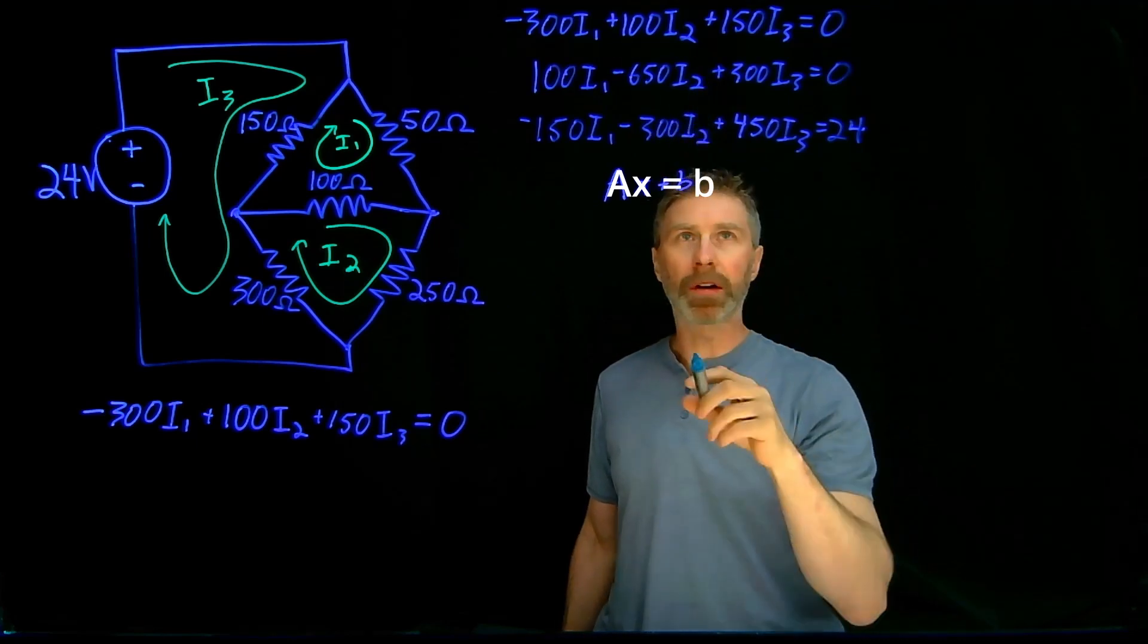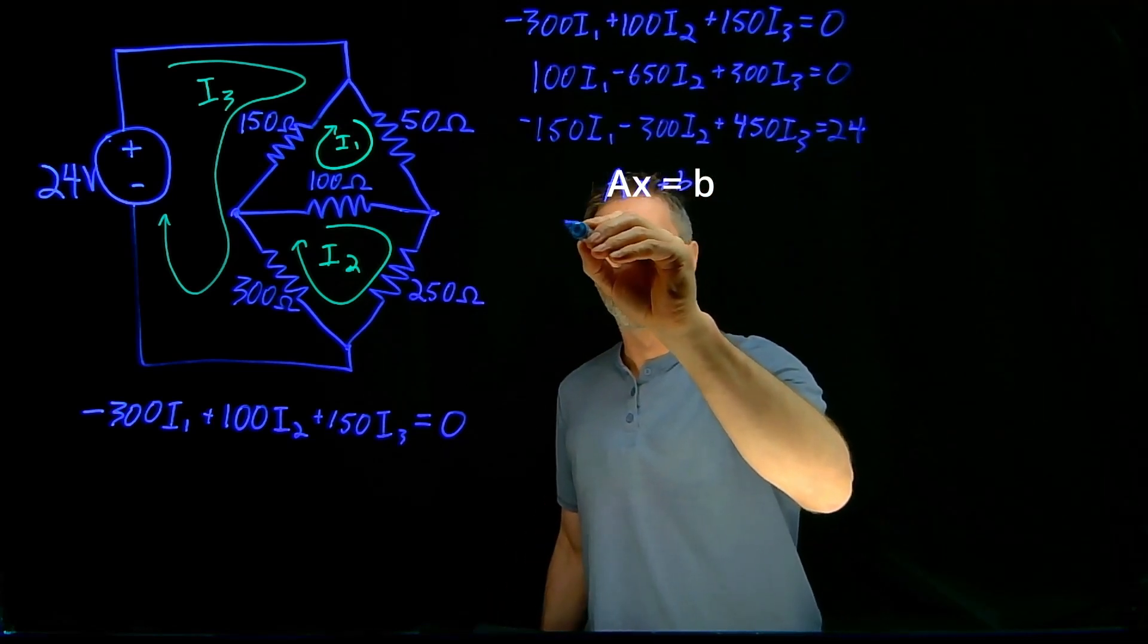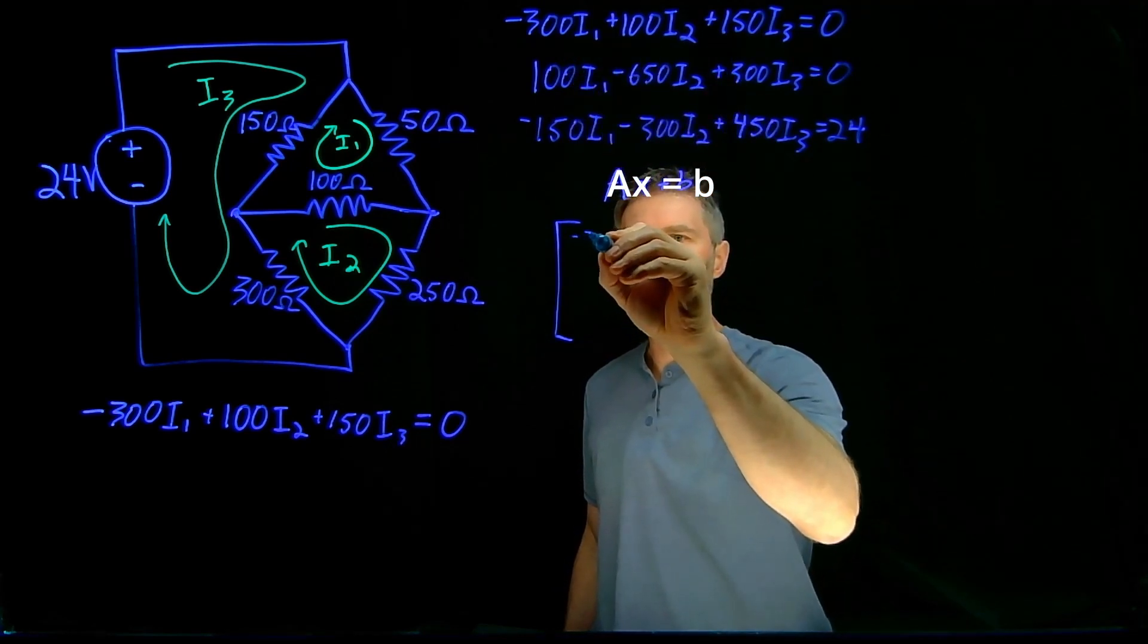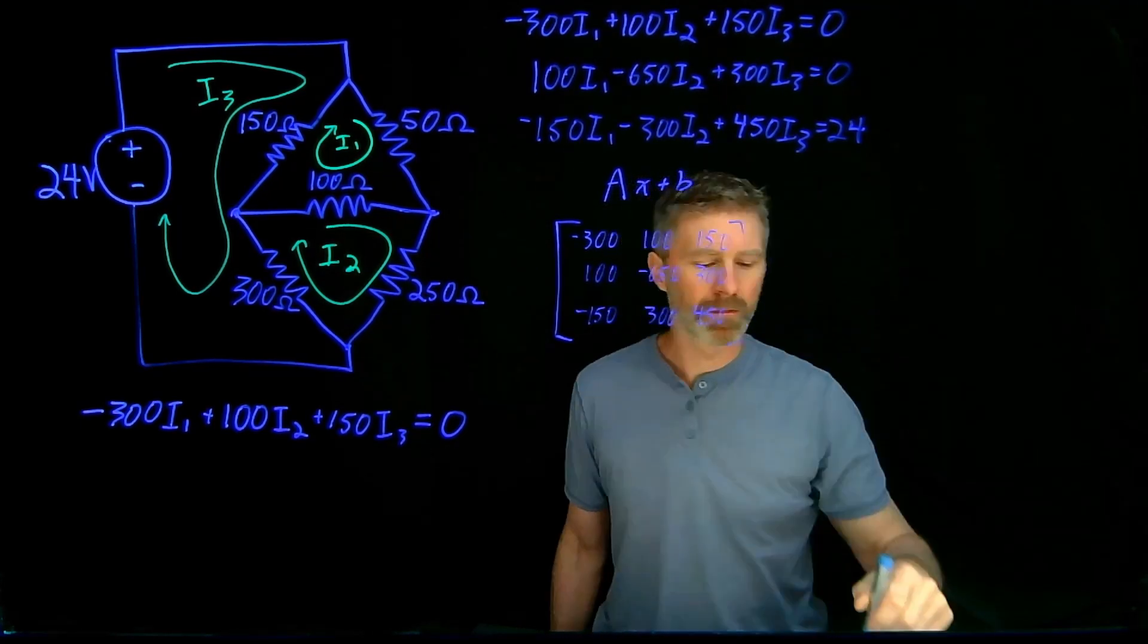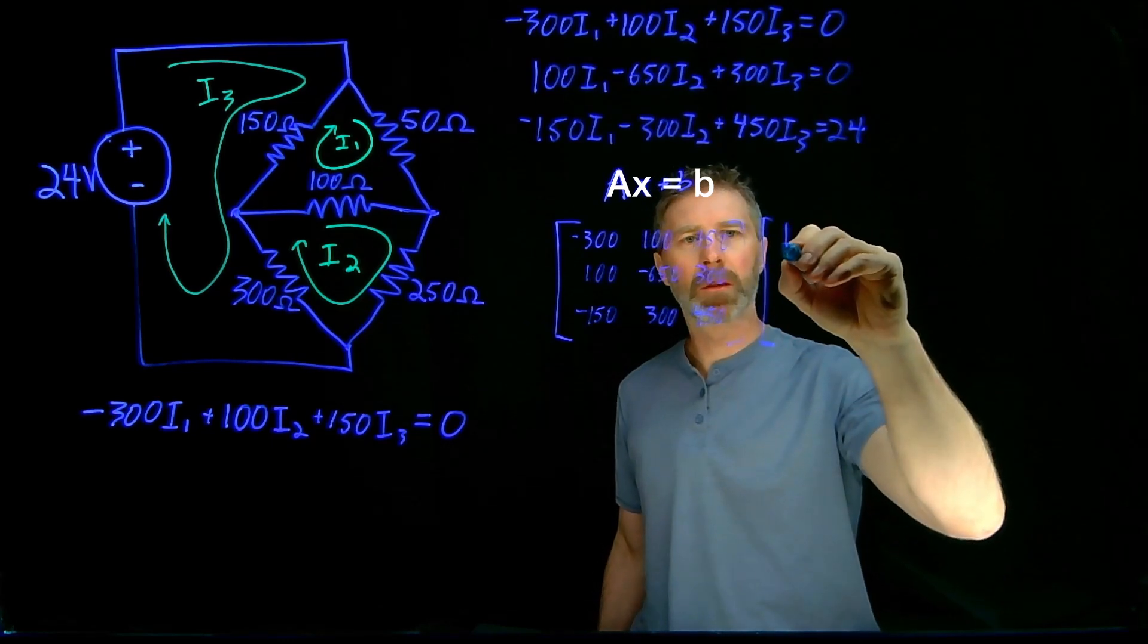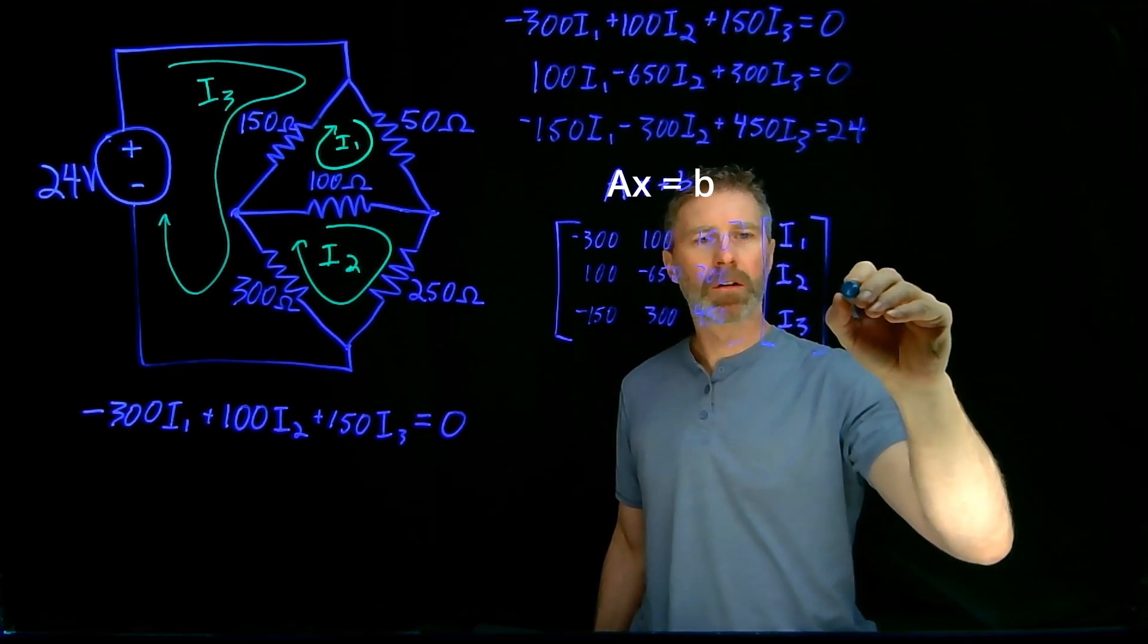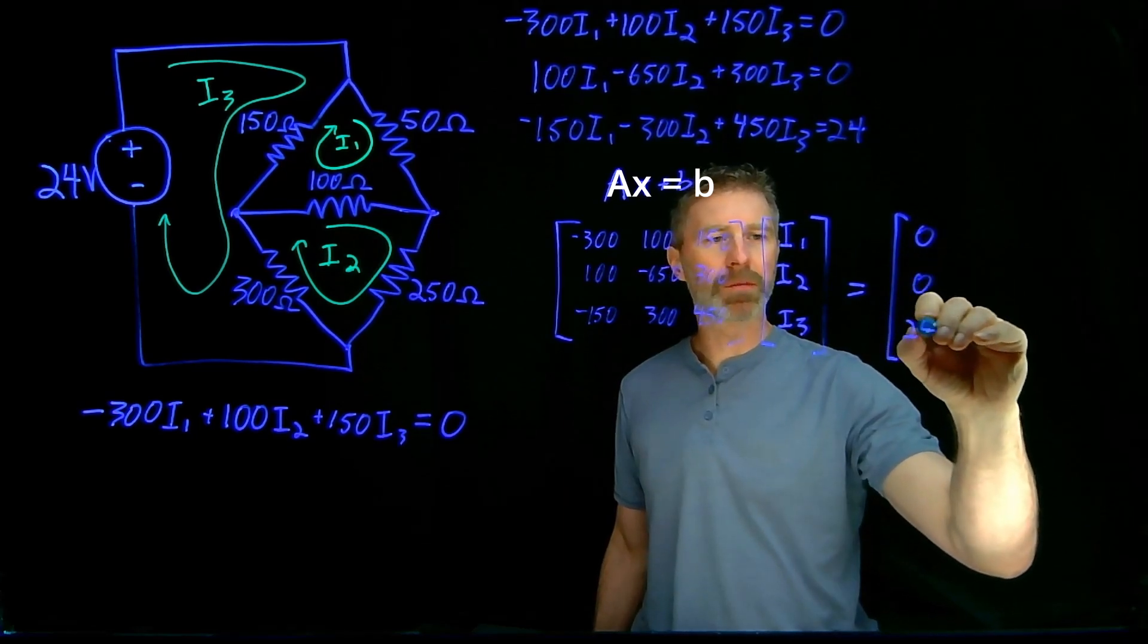In this case, it's going to be I1, I2, and I3, and b are the answers, basically. So A is a three by three matrix that's made up of the coefficients in this equation. x are the things we're trying to figure out. In our equations, we call them I's, I1, I2, and I3, because these relate to the current. And then that equals 0, 0, 24. So there's my b vector.